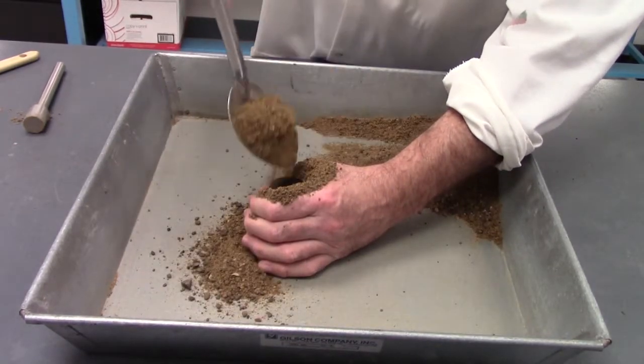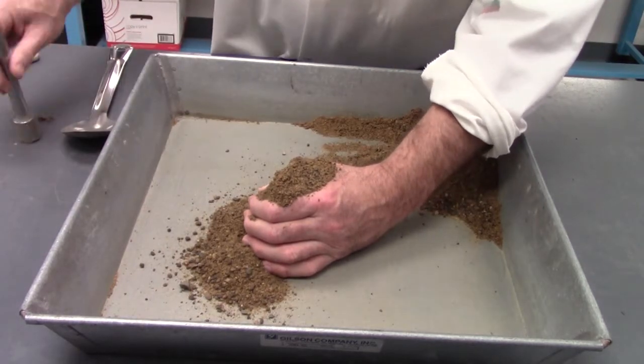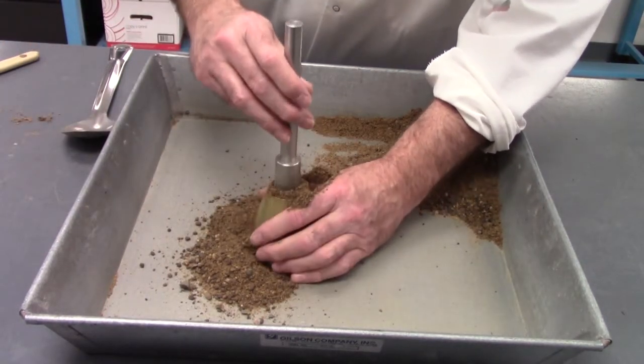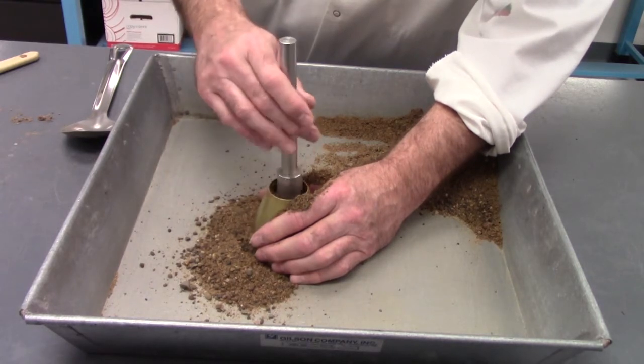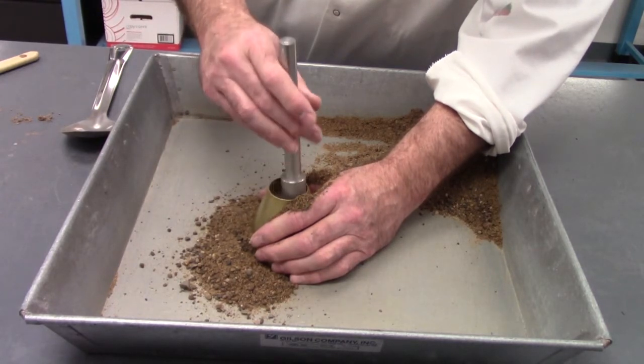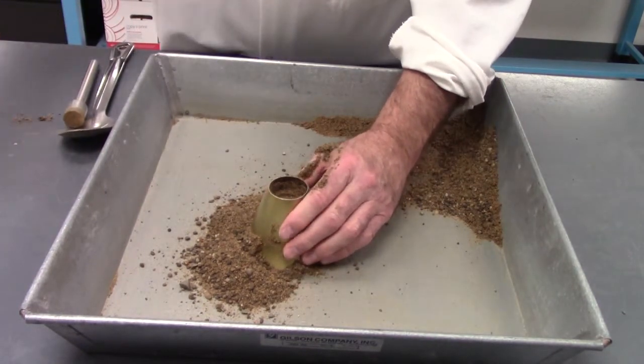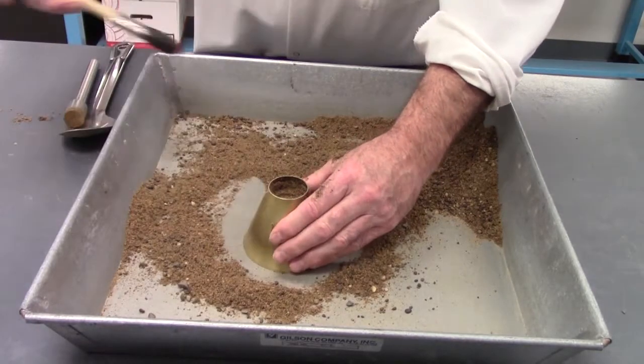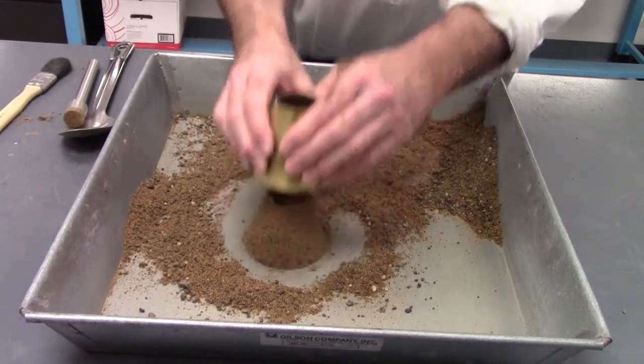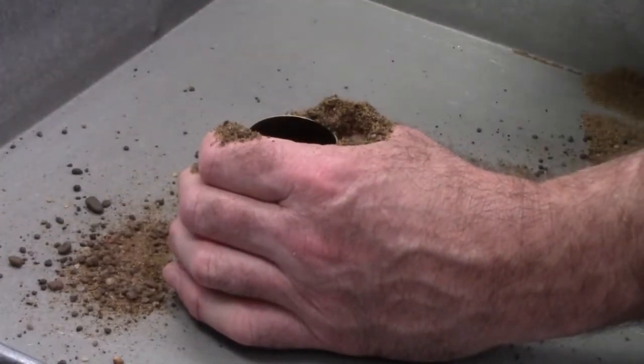Fill the cone to complete overflow, tamp it 25 times, remove all the material around the base. And it still did not collapse, so we'll reconsolidate material and try again.